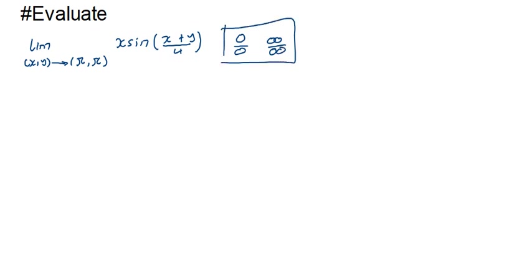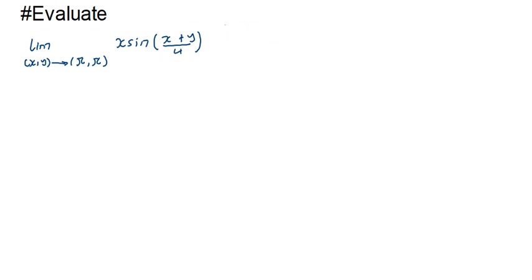If direct substitution gives us an indeterminate form, we need to do some algebraic manipulation, or we can use other tricks — such as replacing variables with polar equations or using the squeeze theorem. Let's try to use direct substitution on the first example, where x equals pi.